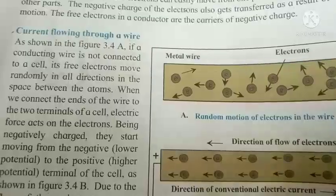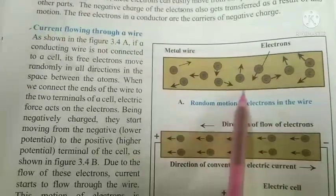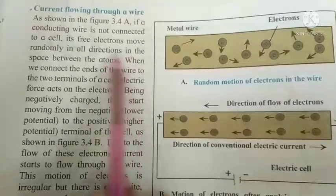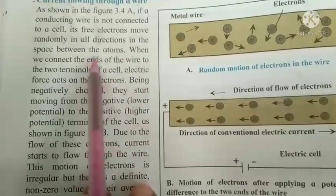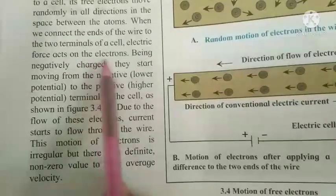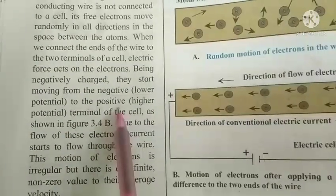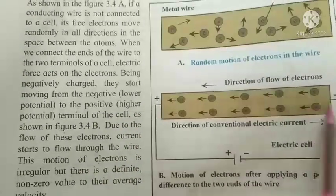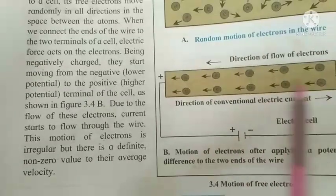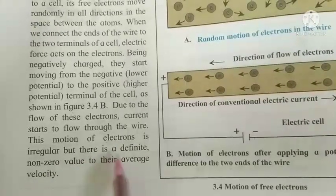Now see the current flowing through the wire. Some diagrams show the random motion of electrons. The direction of conventional electric current is also shown. If a conducting wire is not connected to a cell, its free electrons move randomly in all directions. When we connect the ends of the wire to the two terminals of a cell, electric force acts on the electrons and they start moving from lower potential to higher — that is, from the negative to the positive terminal.